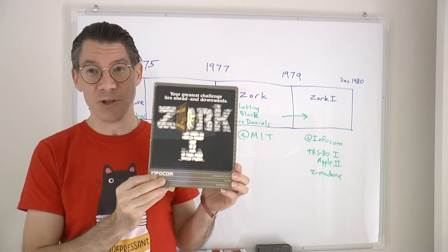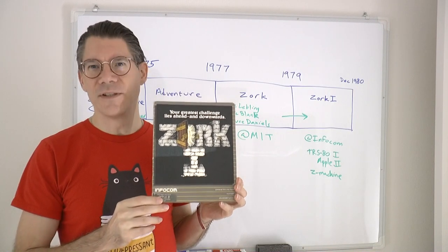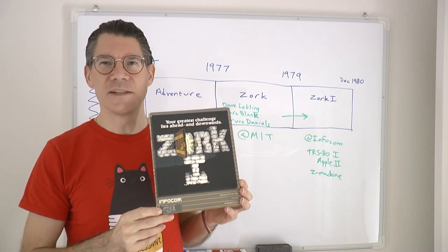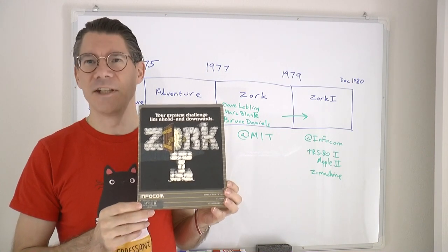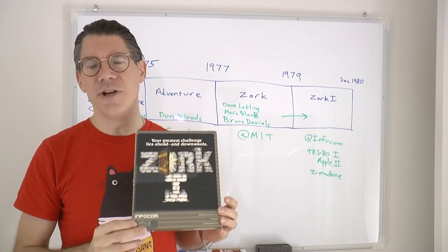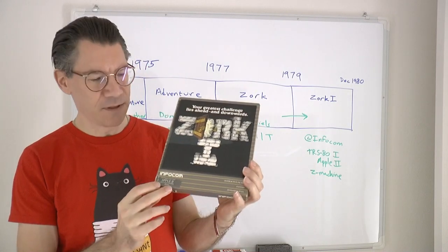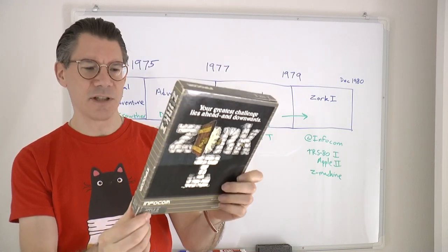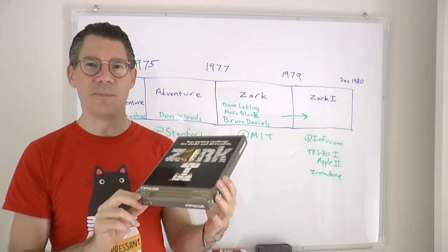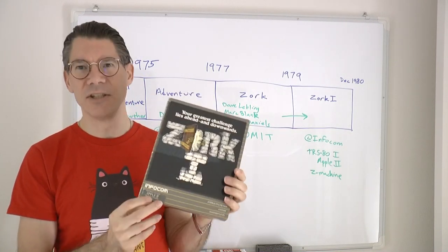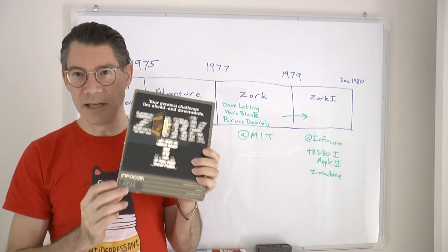If you don't know what Zork is, get thee to Wikipedia. It was the very first commercial text adventure game, what we now know today as interactive fiction. This version is the Apple II version. This box is actually from 1984, but it basically started around 1980 when it first came out.